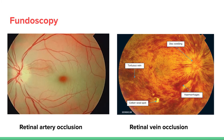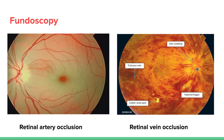Number three is retinal artery occlusion. Think of it this way: artery occlusion means blood isn't coming in, which is why the fundus looks so pale on fundoscopy. With retinal vein occlusion, blood is coming in but can't get out, so you see tortuous veins, hyperemia — it's super red — swelling of the disc, lots of hemorrhage, and cotton wool spots. It's an easy difference.